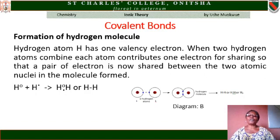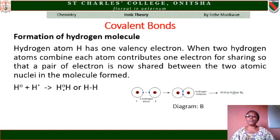Let us use the formation of hydrogen molecule to explain covalent bond. In the formation of hydrogen molecule, hydrogen atom has one valency electron. When two hydrogen atoms combine, each atom contributes one electron for sharing so that a pair of electrons is shared between the two atomic nuclei in the molecule formed. The bond that binds the hydrogen atoms together in a hydrogen molecule is called a covalent bond.